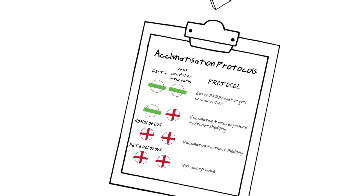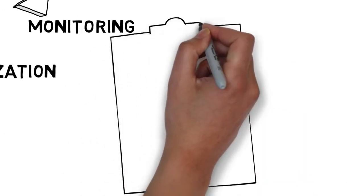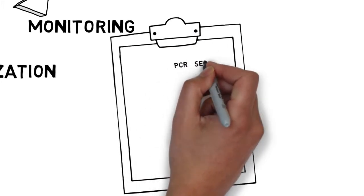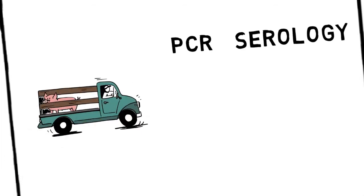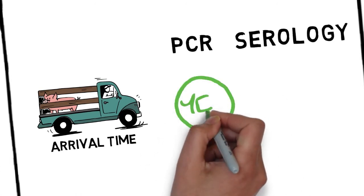During the gilts acclimatization process, we have to know their status both at the time of arrival and when they are introduced into the farm. To accomplish this, we will use serological and PCR techniques. At arrival time, and after 15 days, to confirm the expected status of the gilts, we will use serology and PCR.